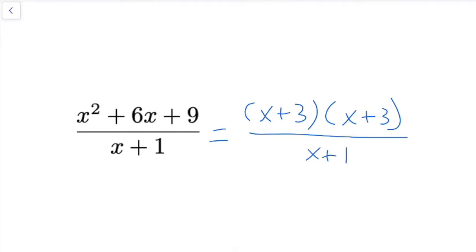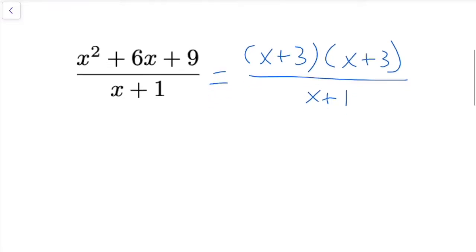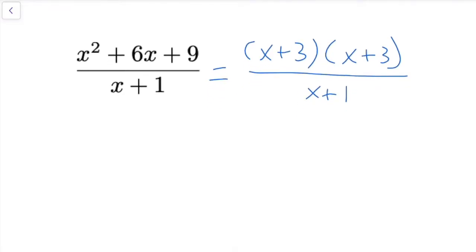Factoring is our preferred method for simplifying these kinds of expressions, because if it has a common factor on the top and bottom then we can simplify those out — keeping the domain in mind — and have the expression look nicer. In this case our factors don't match: we have x plus 3 on the top and x plus 1 on the bottom, so we can't just do that handy canceling out. So factoring maybe isn't the way to go here.